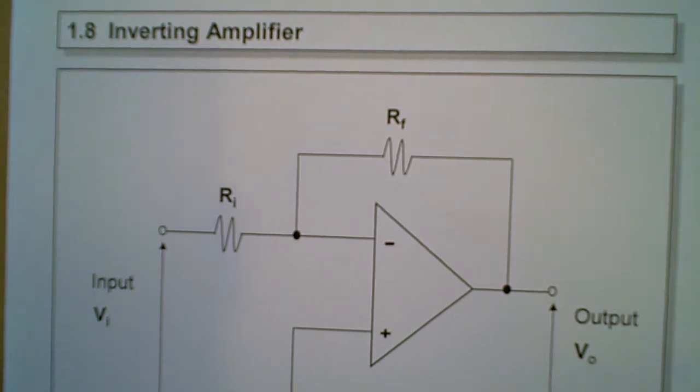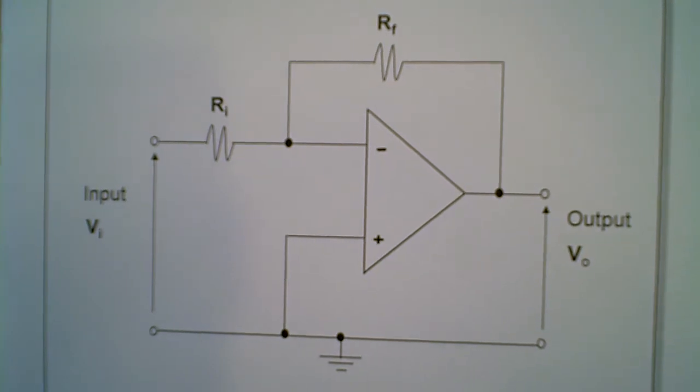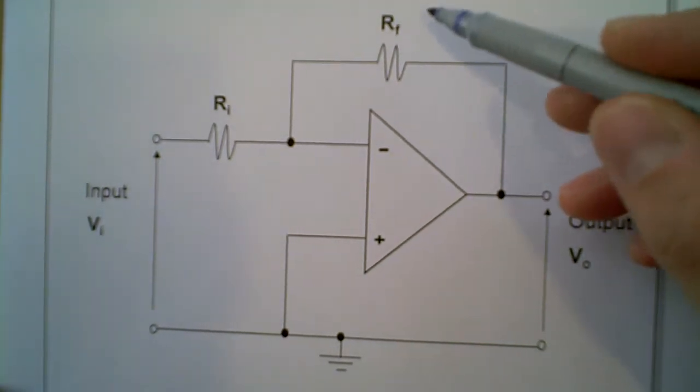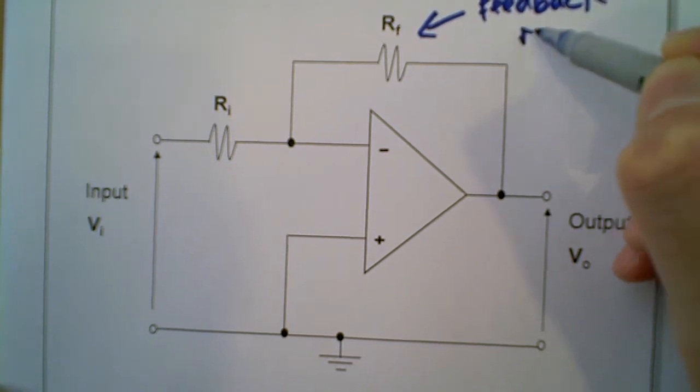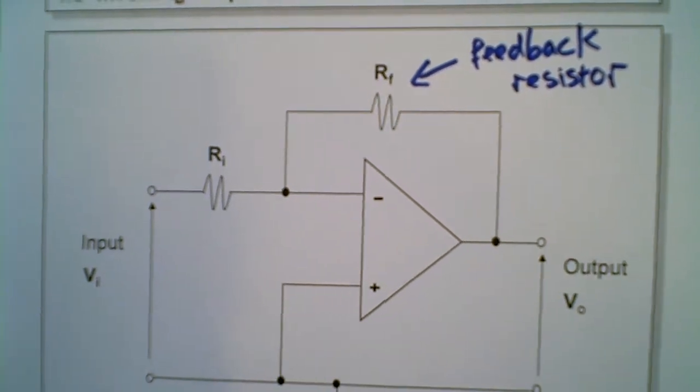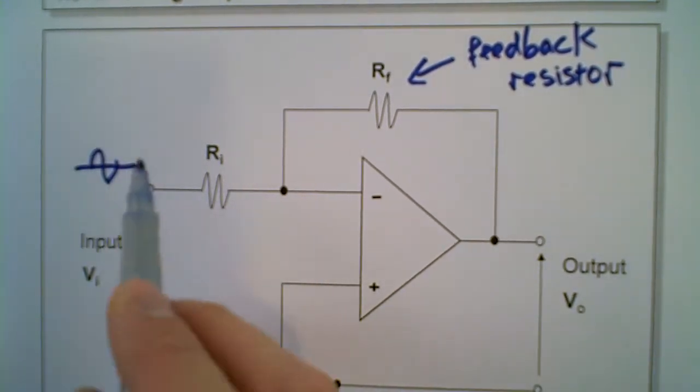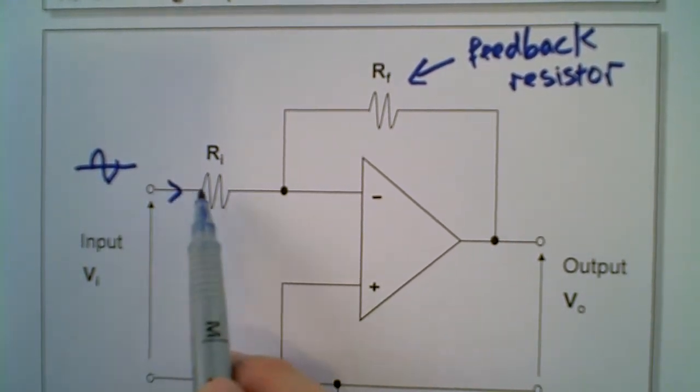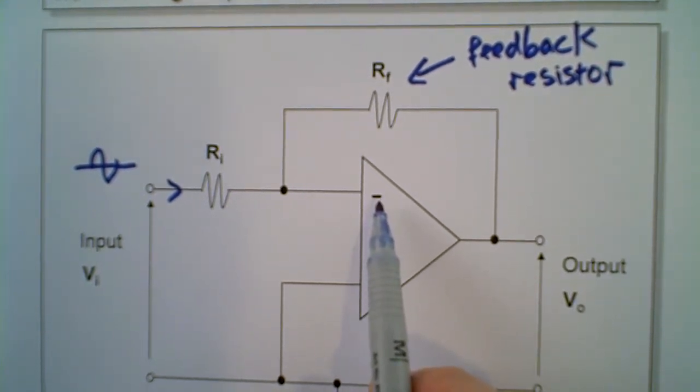Let's take a look at the inverting amplifier circuit. As you can see, this is on page 19 of your notes, the inverting amplifier. Now this is a typical circuit of an inverting amplifier, where you have the feedback resistor and at the same time, you also have an input resistor here. Now notice that the input signal, if I may draw maybe a sine wave, will be entering the input terminal here, going into the negative terminal. You must please make note of this. It's going into the negative terminal of the operational amplifier.